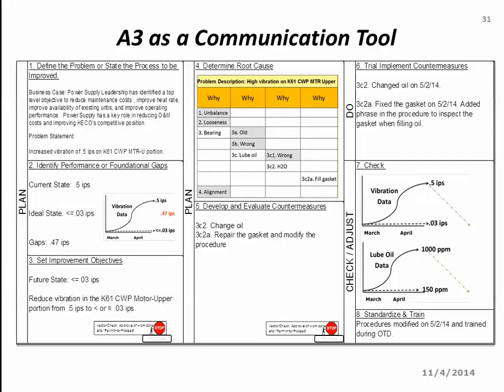Lastly, we want to document the entire problem-solving approach and solution on what we call an A3 — this can be an 11 by 17 or an 8.5 by 11 sheet of paper, whatever your preference. We use the A3 as a communication tool, allowing our whole approach and solution to be documented on one sheet of paper. So the next time you need to approach and solve a problem, consider using the eight-step problem-solving method.